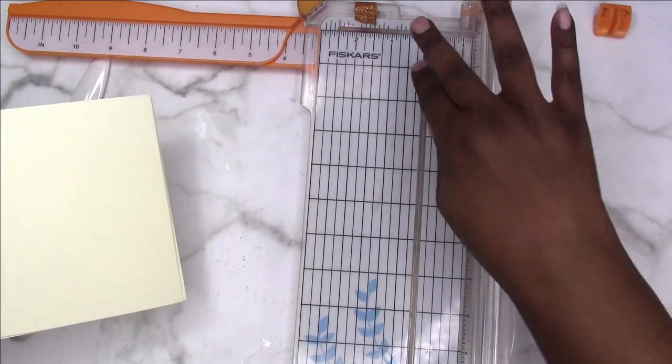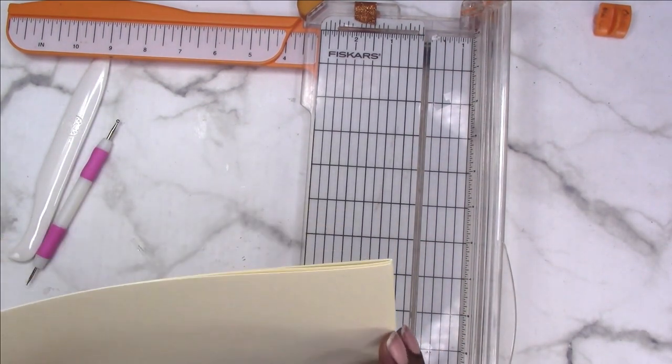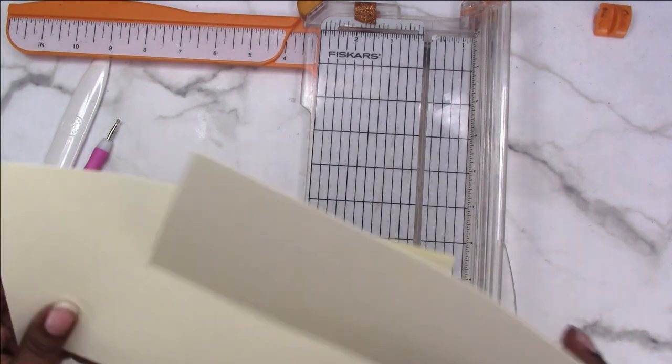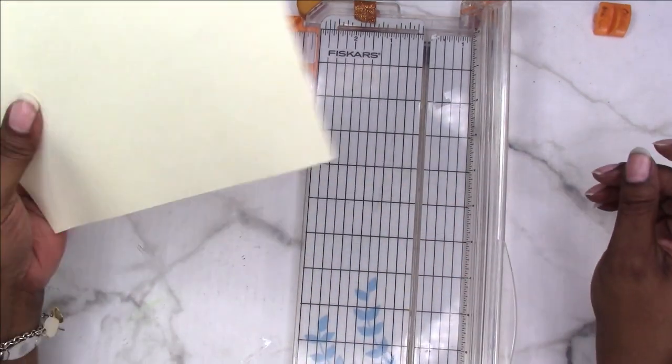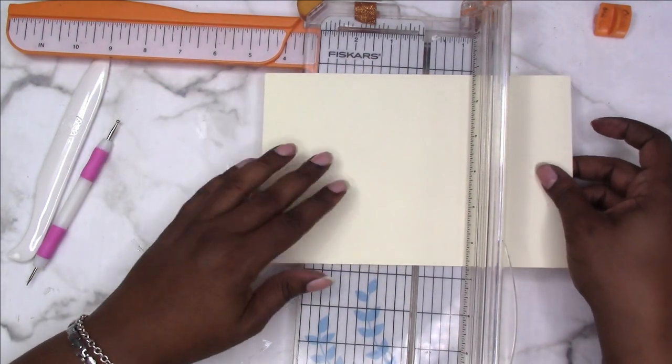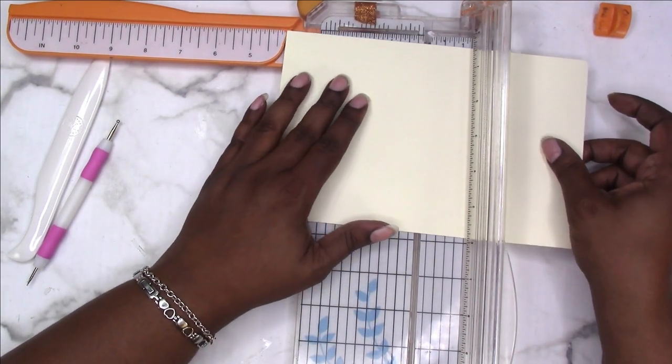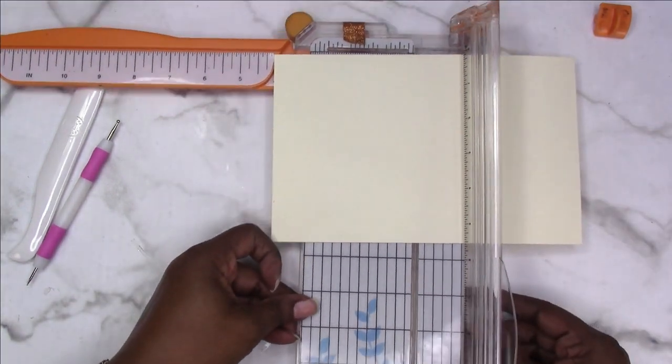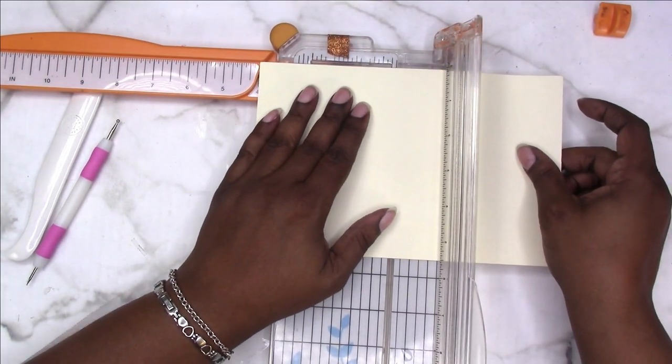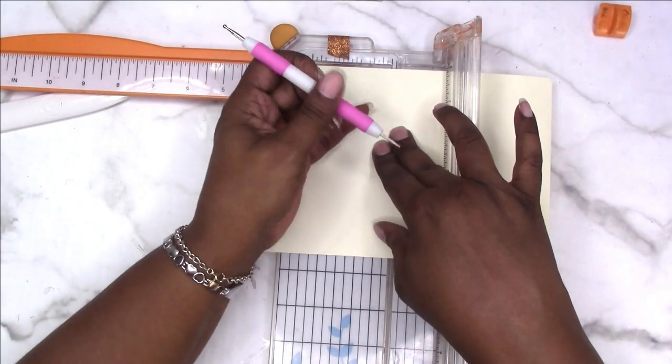Let me take the blade off. I'm going to take one of these pieces of cardstock. I need to score this at four and a quarter inches, so I'm going to line my paper up at four and a quarter.